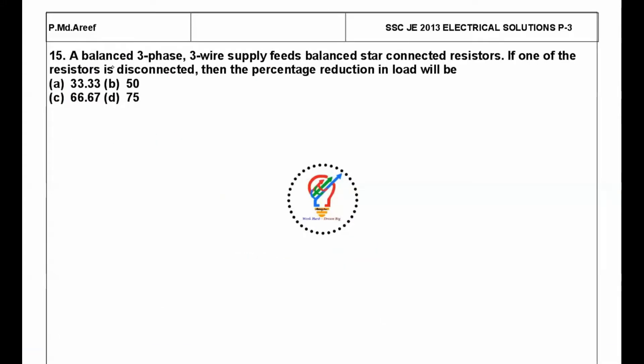Next question: a balanced three-phase, three-wire supply feeds balanced star connected resistors. If one of the resistors is disconnected, then the percentage reduction will be? So the power in a three-phase system is P equals root 3 into VL IL into cos phi.